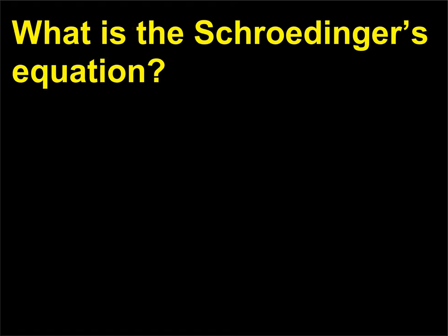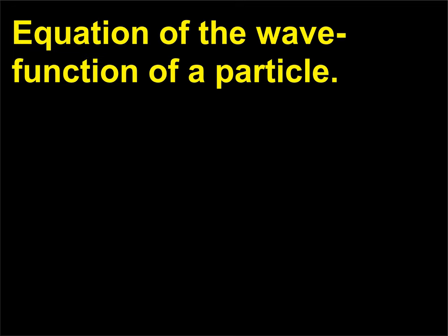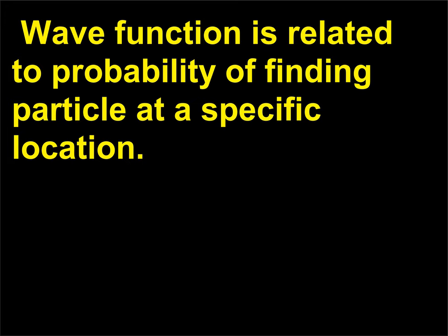What is the Schrödinger's equation? Equation of the wave function of a particle. Wave function is related to probability of finding particle at a specific location.